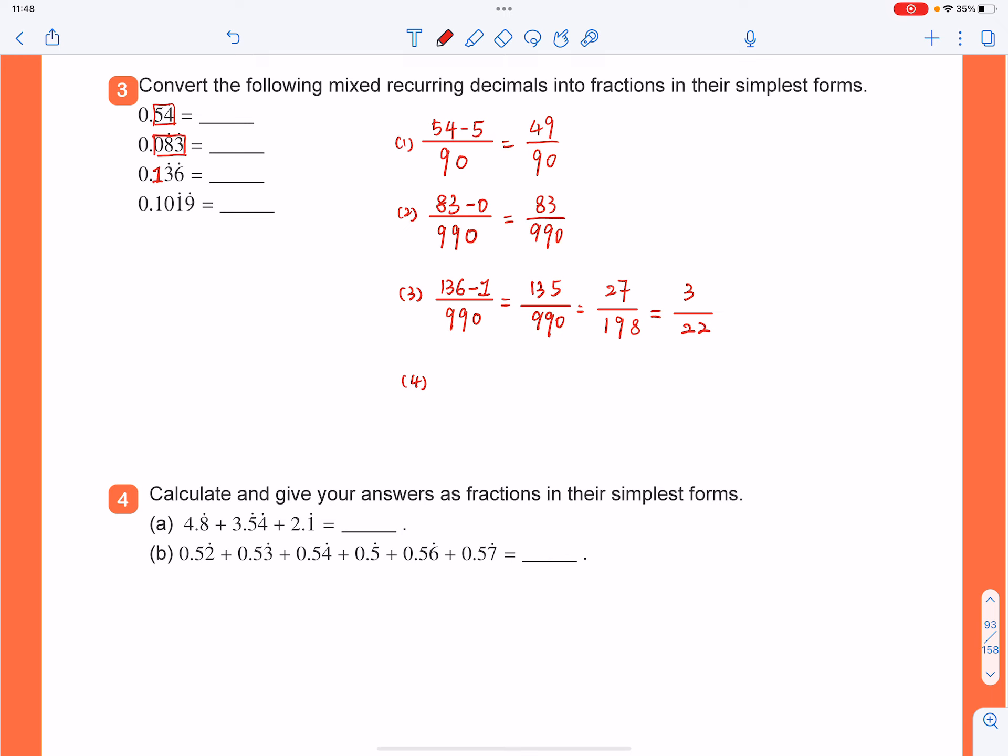And then the last one, fourth one, that would be 0.1019 with 1, 9 recurring. So as for the denominator, since you've got 2 digits in the recurring part, in the repetend, so you have 9 and 9. And then you have 2 digits that are not recurring, so you have to add 2 zeros after that.